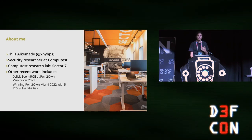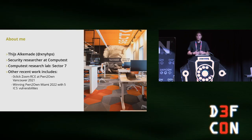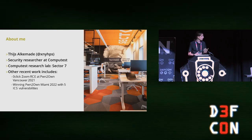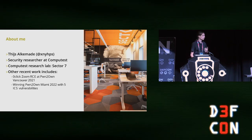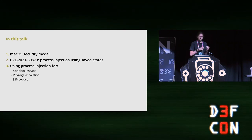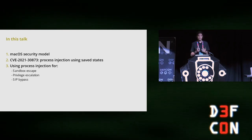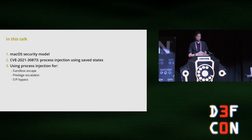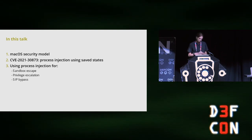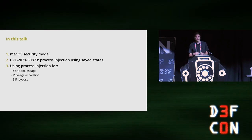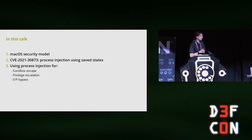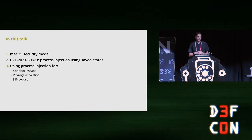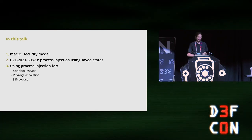Today I'm going to be talking about macOS security, which has been a bit of a specialty for me. I've been doing a lot of work with macOS over the years — it's a system I really know the best. This talk will consist of three parts: first, I'll talk about the macOS security model, because many people still have incorrect assumptions about how security works on macOS. Then I'll describe the vulnerability I found — a process injection vulnerability. And in the third part, I'll demonstrate how this vulnerability could be applied for escaping the sandbox, privilege escalation, and bypassing SIP.